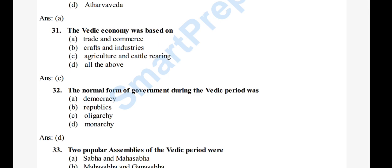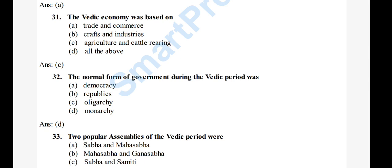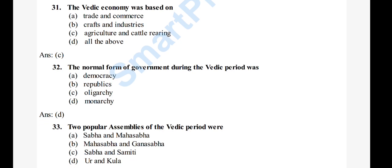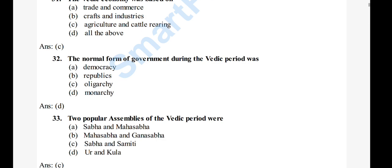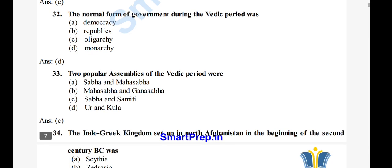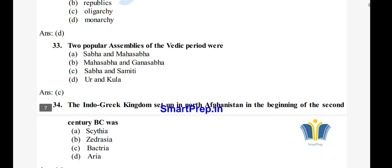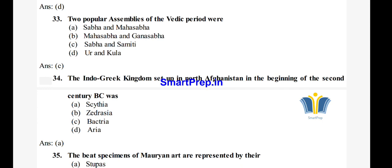Question 33: The popular assemblies of the Vedic period — these were the most important assemblies. Question 34: The Indo-Greek kingdom set up in North Afghanistan in the beginning of the 2nd century BC — options: A) Scythian, B) Yodrasia, C) Bactria. The right answer is option A, Scythian.